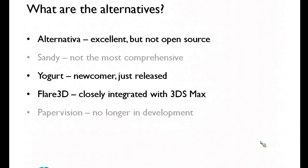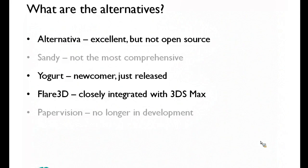There are some other options if you want to get into 3D. You've got Alternativa, which everyone says is brilliant, but it's not open source — you pay for it or it's watermarked, though you can use it for commercial work if someone's paying for it. Sandy I think has fallen by the wayside. Yogurt showed promise for a while but I haven't seen anything from them recently. If there's anyone using Yogurt I'd love to hear from them, because it just didn't seem to be moving at the right pace.